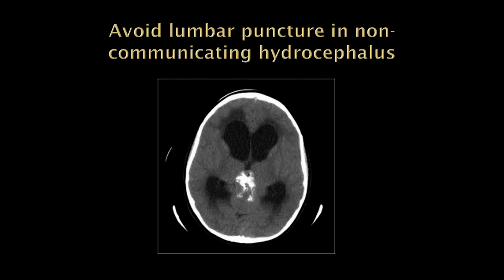This is a non-communicating hydrocephalus, and very important: oftentimes a patient comes into the emergency room with something like this. A lumbar puncture might seem helpful to analyze the cerebral spinal fluid, but you can never do a lumbar puncture in a non-communicating hydrocephalus. You're drawing out fluid in the lumbar cistern, but the area above the blockage is under increased pressure — those lateral ventricles are under increased pressure — so you're creating a pressure gradient, and the brain can actually herniate and the patient can die.